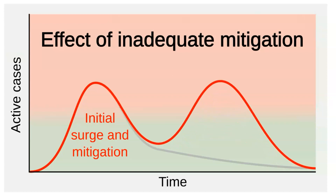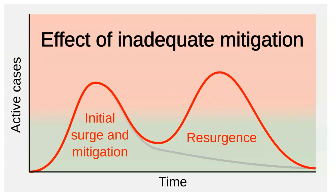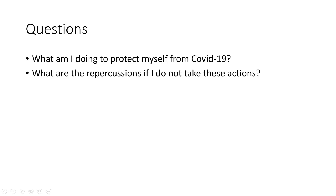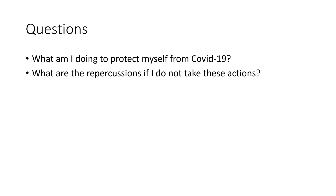The main concern is that COVID-19 is not going anywhere. Any pressure to reduce exposure will help mitigate disease, while reducing the mitigation will help a comeback of disease. The questions are: What am I willing to do to protect myself from COVID-19? What are the repercussions if I do not take these actions? Am I more concerned with myself than the people around me?